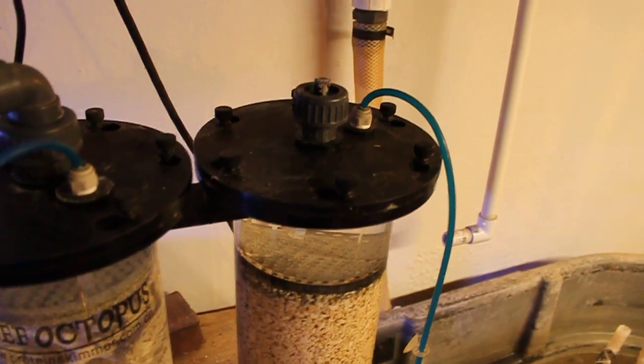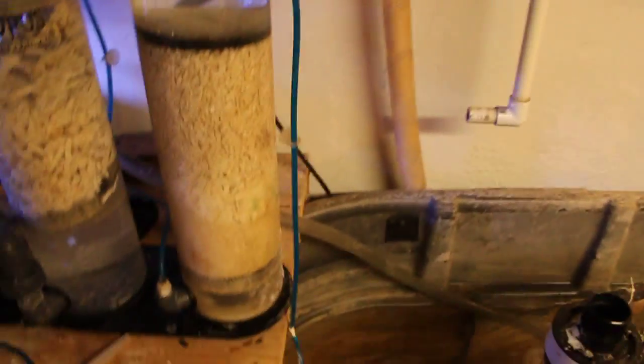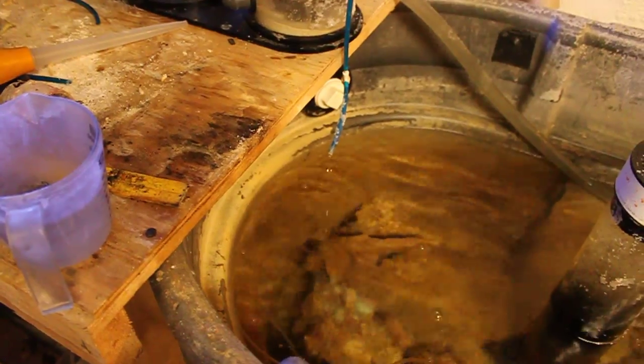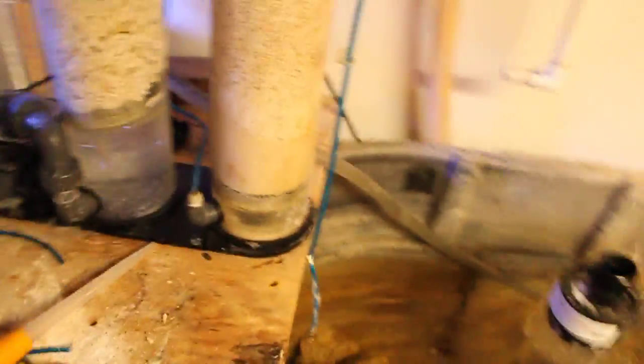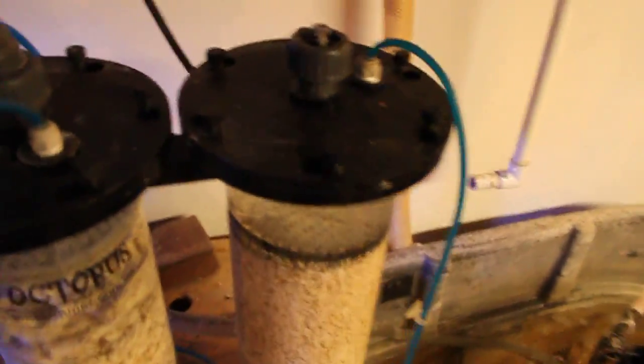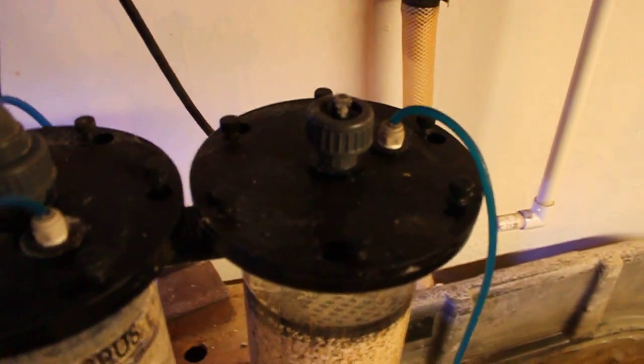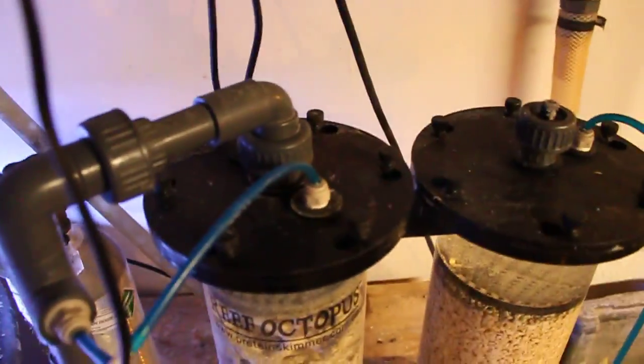And then it just comes up and drips into the tank, dripping it nice and slow like that. And this does not have a controller on it. This is where a pH probe could go if I wanted to, but it's not necessary.